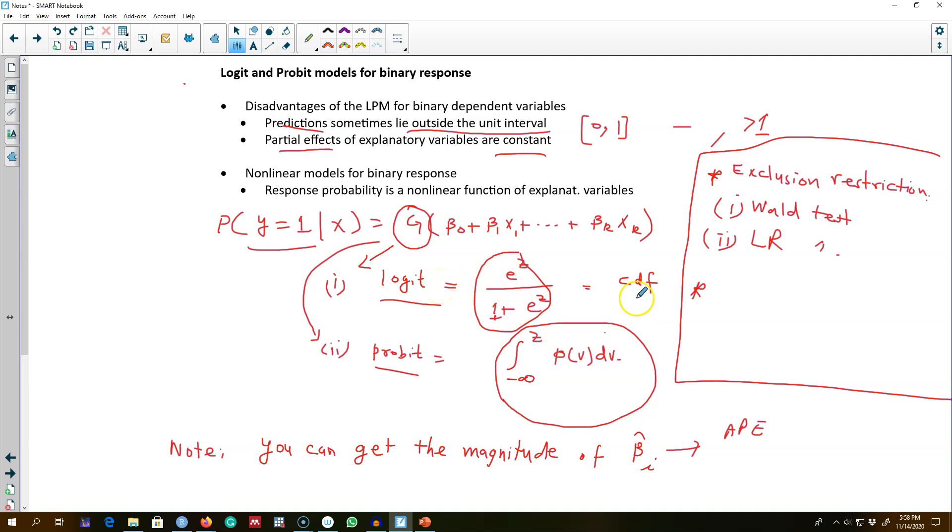The R-squared interpretation of the logit and probit model is a little bit different. That's why for logit and probit model, you need to calculate what we call McFadden pseudo R-squared to talk about the goodness of fit.